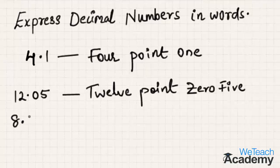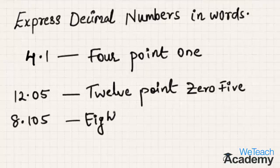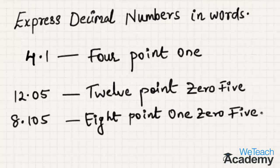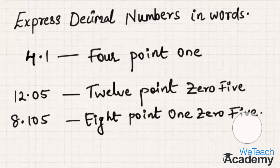Here you can express this as 8.105 — the decimal part is always expressed separately. Not as 8.105 read together, but the right way of expressing it is digit by digit: 8.105. Now let us consider a few more examples and try to express the decimal numbers in words.